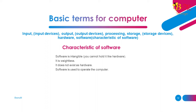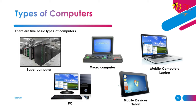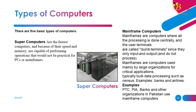Part 3: Types of Computers. There are 5 basic types: Supercomputer, Mainframe Computer, Mobile Computers (Laptop, PC, Mobile Devices, Tablet). Supercomputers are the fastest computers and, because of their speed and memory, are capable of performing operations that would not be practical for PCs or mainframes. Mainframe computers: Mainframes process everything centrally, and user terminals are called dumb terminals since they only input and output and do not process.